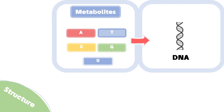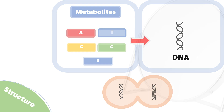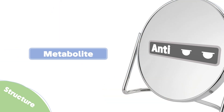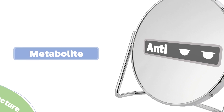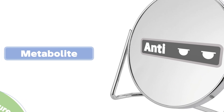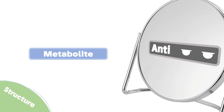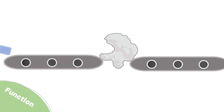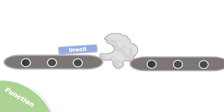DNA metabolites are highly needed and metabolized by dividing cells. Anti-metabolites are chemically similar to metabolites so that they can fool the cell into believing they are some of its naturally present building blocks. They can do this via two ways: first, by inhibiting a metabolic reaction.